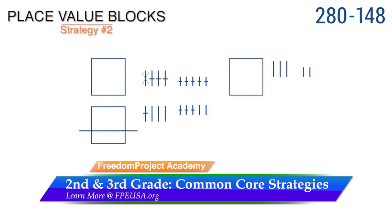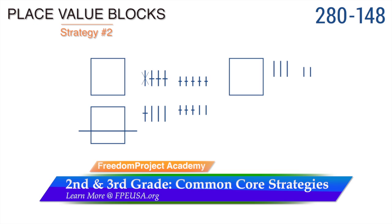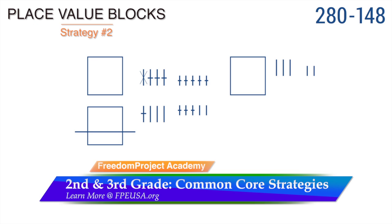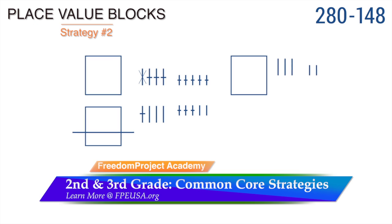The second early elementary strategy is place value blocks. Again, we do not need to know subtraction facts. We begin by drawing 200s and 8 tens. We simply cross out a 10 to give us 10 ones so we can mark through 8 ones, 4 tens, and 1 hundred. You see what is left on the right-hand side of the screen.